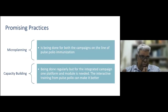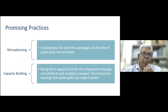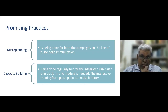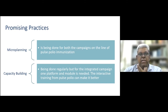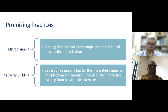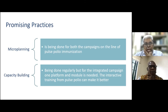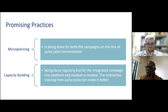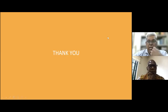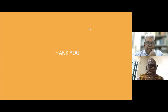Promising practices: micro planning (based on pulse polio macro planning) is a good foundation that needs to continue, and capacity building should move to a single, unified training module on one platform, made more interactive as in pulse polio. The participant-derived definition of integration: the process of integrating components of a specific program designed to address a specific disease or health issue with another health program, supporting and maintaining ongoing interventions in a synchronized and harmonious way, including cross-cutting opportunities to make the integrated campaign more effective and efficient.